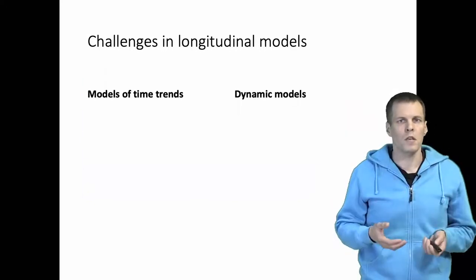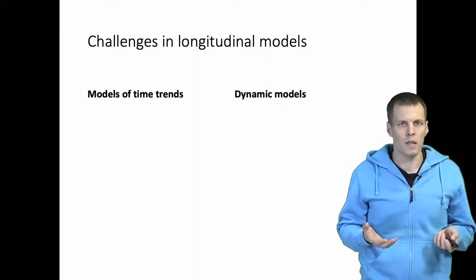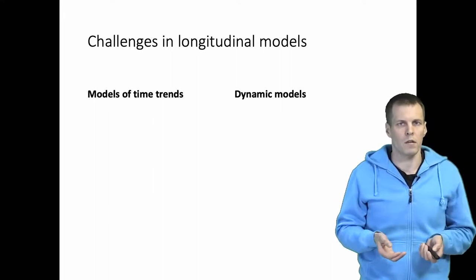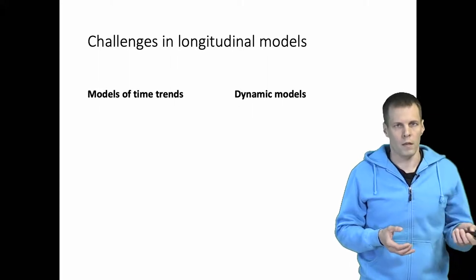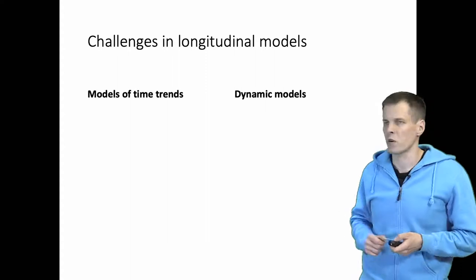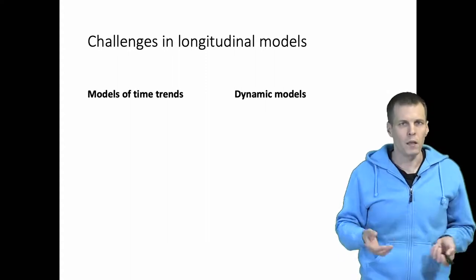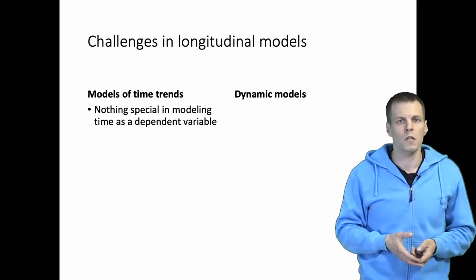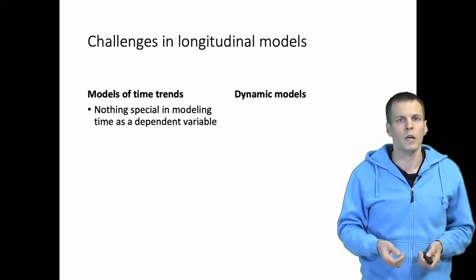We have models that model time as an explanatory variable—they model time trends—and then we have dynamic models where y predicts its future values. These models of time trends are very simple in a way because time is just a variable. It's just an observed variable. There's nothing special about time. However,